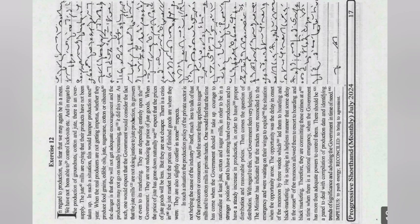He is saying in a helpless manner that some delay in the onset of the monsoon allowed them to resort to hoarding and black marketing. Therefore, they are committing these crimes at a time when there is a national emergency, when the government has more than adequate powers to control them. There should be a panel to deal with compilation of production data and identifying trends of significance and advising the government in time of need. Stop.